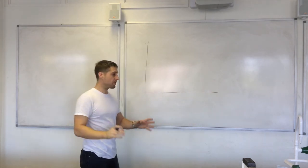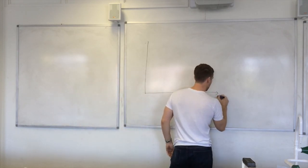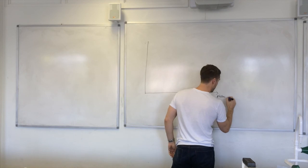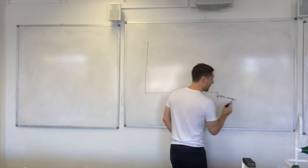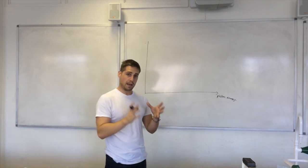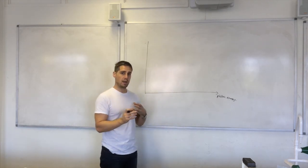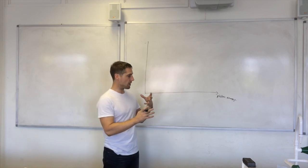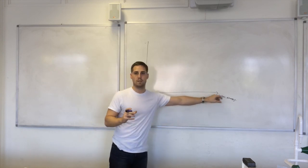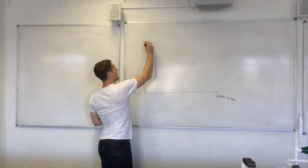It's a graph and along the bottom here we have photon energy. So a photon is a packet of X-ray energy and if you have high energy X-rays we're talking about high photon energies. And here we have intensity.